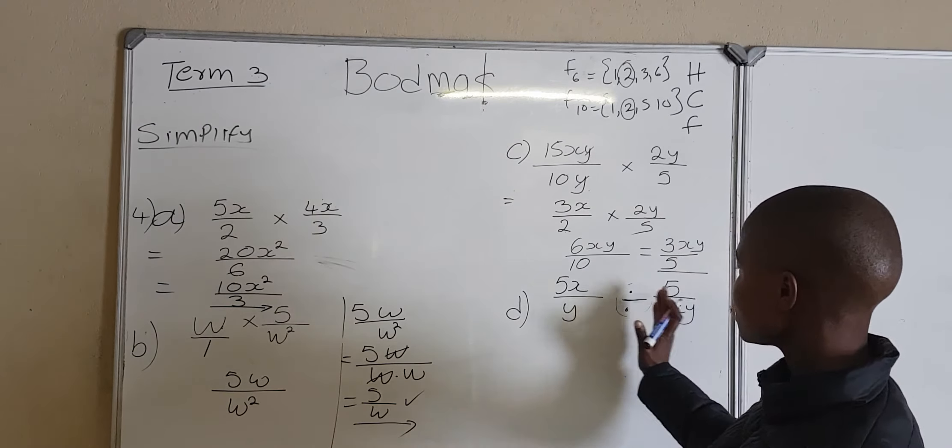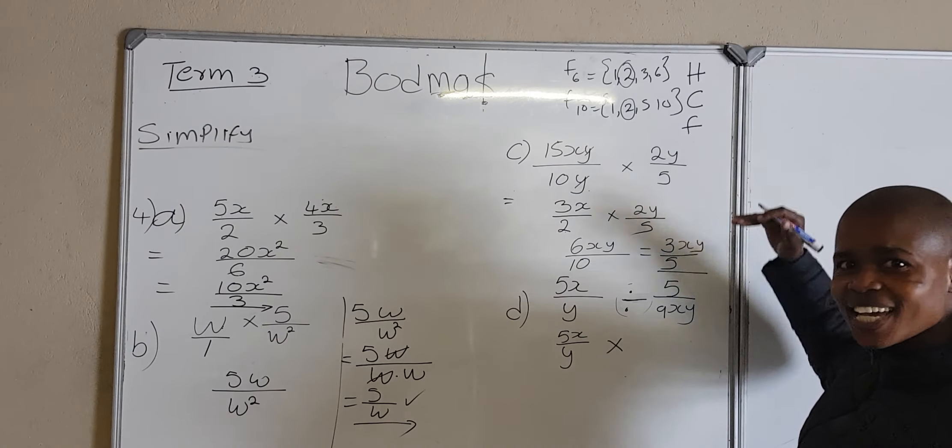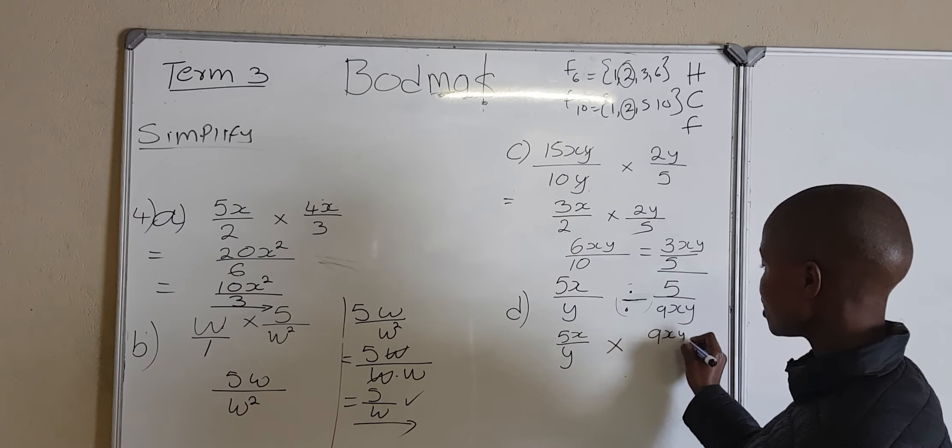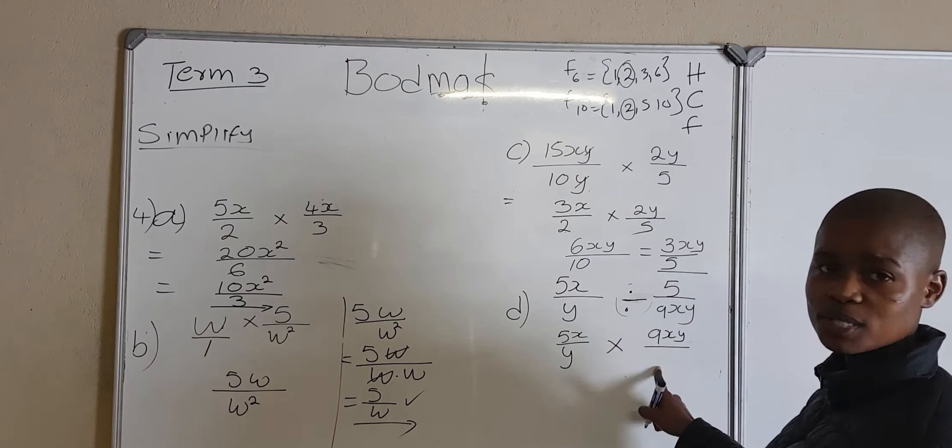So I'm going to have 5x divided by y, multiplied — I've changed the division sign into multiplication. When I write this as its reciprocal, the number that was the denominator must become the numerator, and the numerator must become the denominator. So it's going to be 9x as my numerator. If you're comfortable with cancelling common factors before multiplying, you can do that — this 5 will cancel that 5.